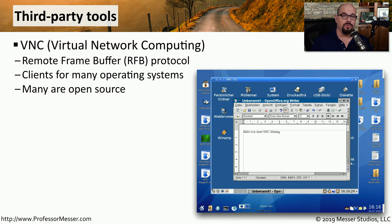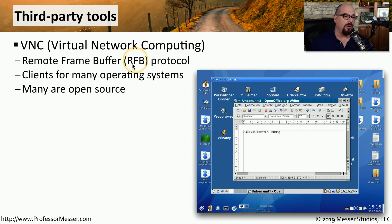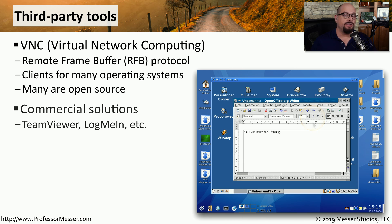There are also many third-party tools for remote desktop or remote control of another computer. One very common form is VNC, which stands for Virtual Network Computing. VNC uses the RFB protocol, or Remote Frame Buffer, to be able to view a remote desktop on another system. VNC is very popular, and you can find both servers and clients available from many different operating systems. There are also many commercial versions of these remote control programs, such as TeamViewer or LogMeIn, that you can install on many different operating systems as well.